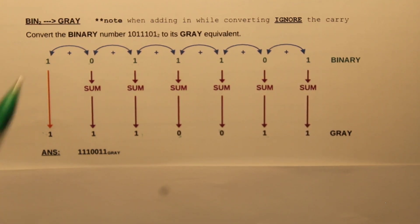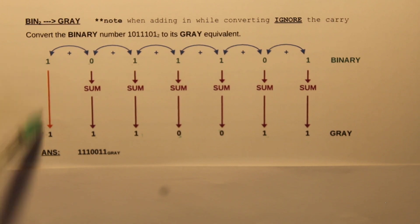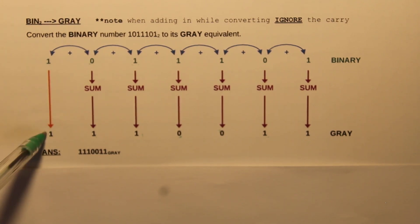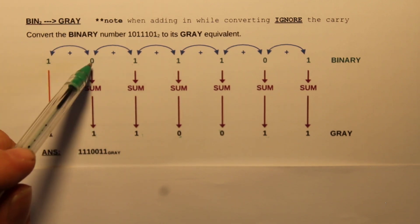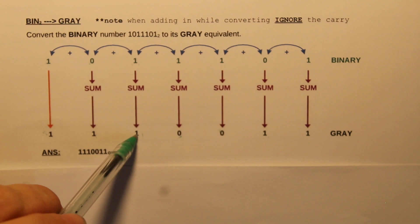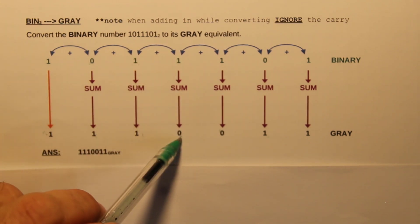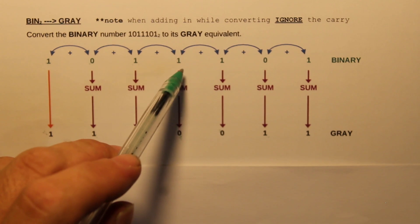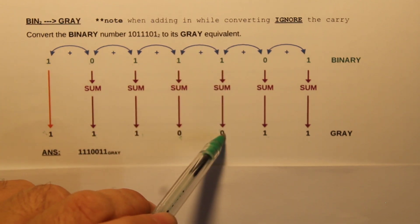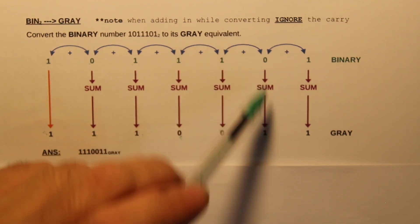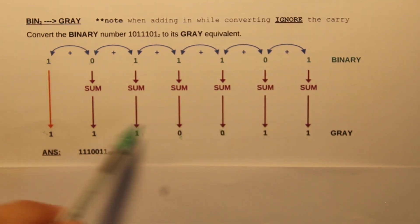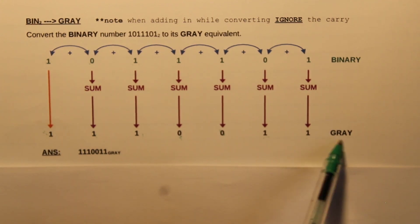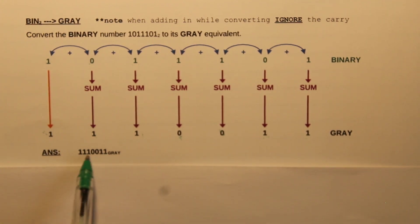Continuing: one plus one is zero, ignore the carry; one plus zero is one; and zero plus one is one. So to recap — we drop down the first number, then say one plus zero equals one, zero plus one equals one, one plus one equals zero (ignore carry), one plus one equals zero (ignore carry), one plus zero equals one, zero plus one equals one. There's the answer in Gray Code.